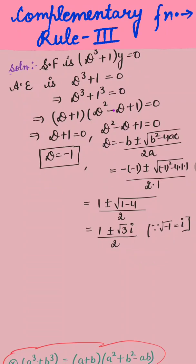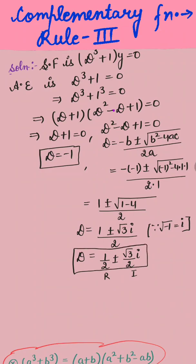Now we have the value of D: (1 ± √3 · i) / 2. We can write it as 1/2 ± (√3/2)i, separating the real and imaginary parts. This real part is 1/2 and the imaginary part is √3/2. So we now have 3 roots.